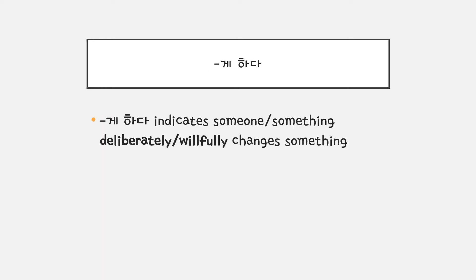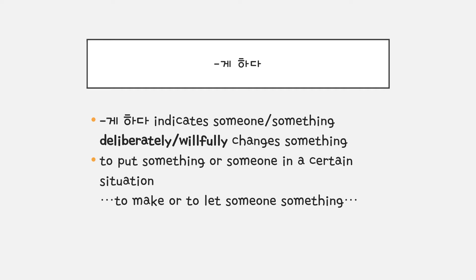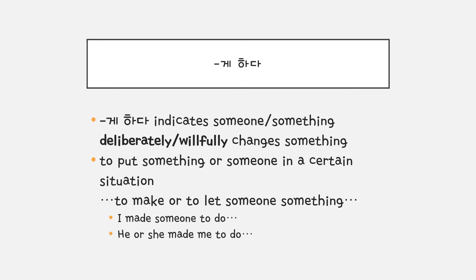개하다 indicates that someone or something deliberately or willfully changed something. It is also to put something or someone in a certain situation. So in English, it's like to make or to let someone do something. For example: I made someone to do, or he or she made me to do something, or please make it to be like this for me.